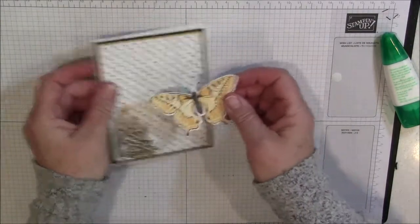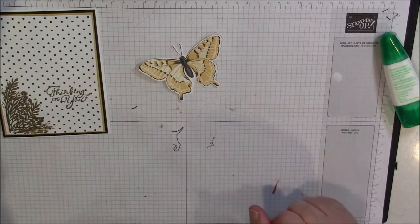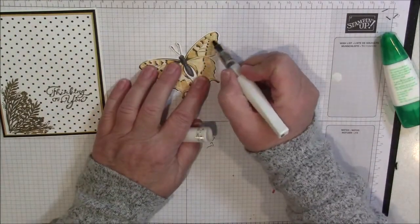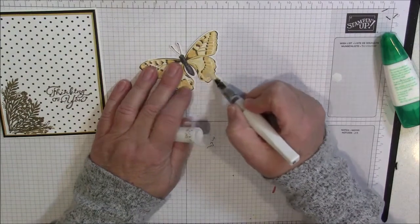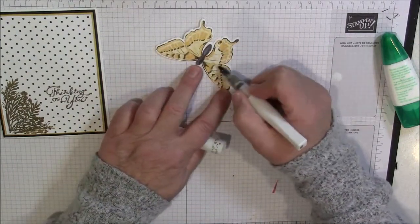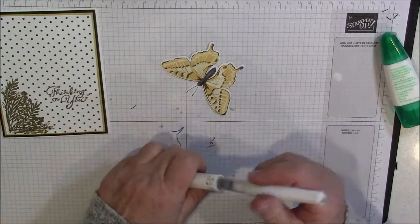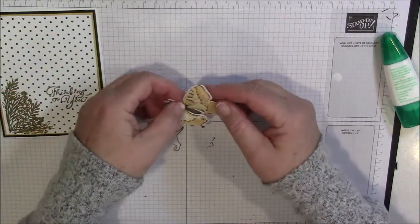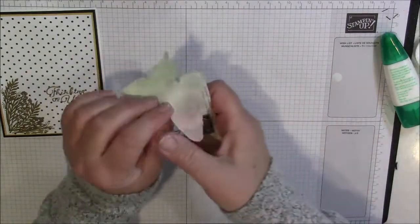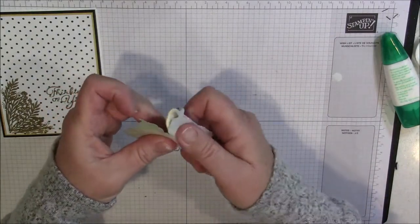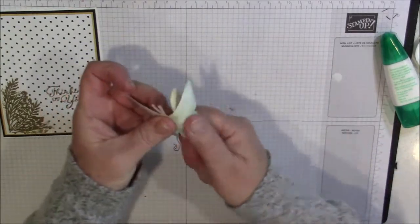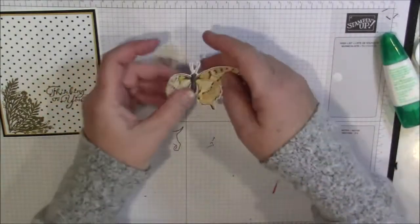Now on our butterfly, I want it to have a little bit of bling too. So I'm going to take my Wink of Stella and just brush over the wings a little bit. It doesn't have to be fully covered. It will get the glistening effect. Just like that. Okay, we're going to take our bone folder and we're going to curve our wings up. Just slightly. Just like that.